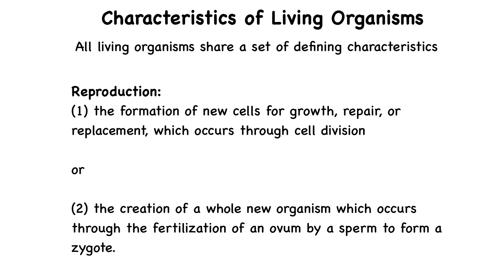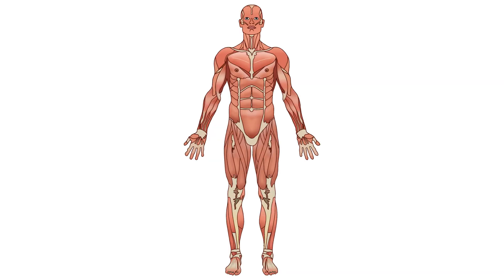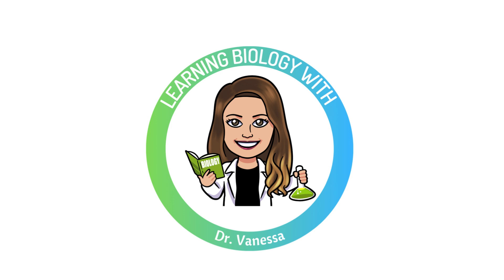These characteristics help distinguish living organisms from non-living matter and explain how complex systems like the human body continue to function, adapt, and survive. Understanding the human body begins with understanding how it's organized, what systems keep it running, and why it behaves like a living adaptive system. Whether you're pursuing a career in healthcare, preparing for an exam, or simply want to understand how your body works, this foundational knowledge is essential and it's just the beginning. Because the more you understand about your own biology, the better prepared you are to make decisions that support your health, your future, and your curiosity. If this video helped bring clarity to a complex topic, I hope you'll subscribe and stay connected. Thanks for watching and I'll see you in the next video.